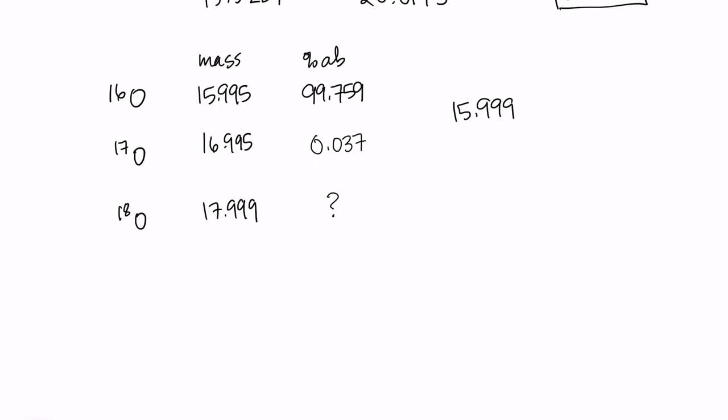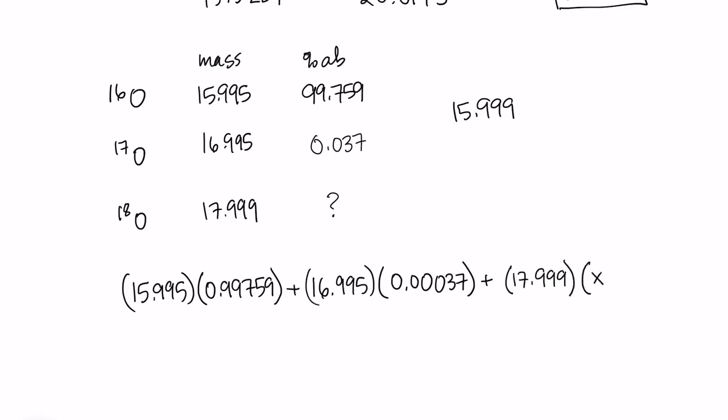So what I want to do is calculate the percent abundance of my oxygen 18. I'm going to set up my calculation just exactly the same way as I did before. I'm starting with my mass 15.995, and that's my 99.759%. I'll add my oxygen 17, 16.995 times 0.00037. That's changing that percent to just a regular decimal. And then the last one, I've got 17.999, but I don't know what the percent abundance is. When I add those all together, I should get 15.999.